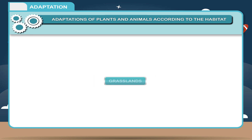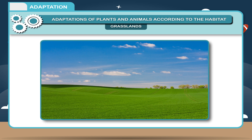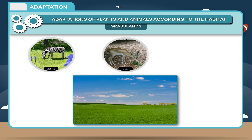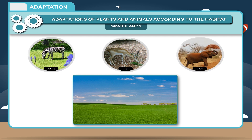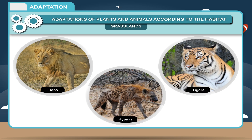Grasslands habitats are windy and dry, where grasses are the main plants. They provide home and food to both herbivores and carnivores. Zebras, deer, and elephants are some of the herbivores living in grasslands, whereas lions, tigers, and hyenas are the carnivores found there.